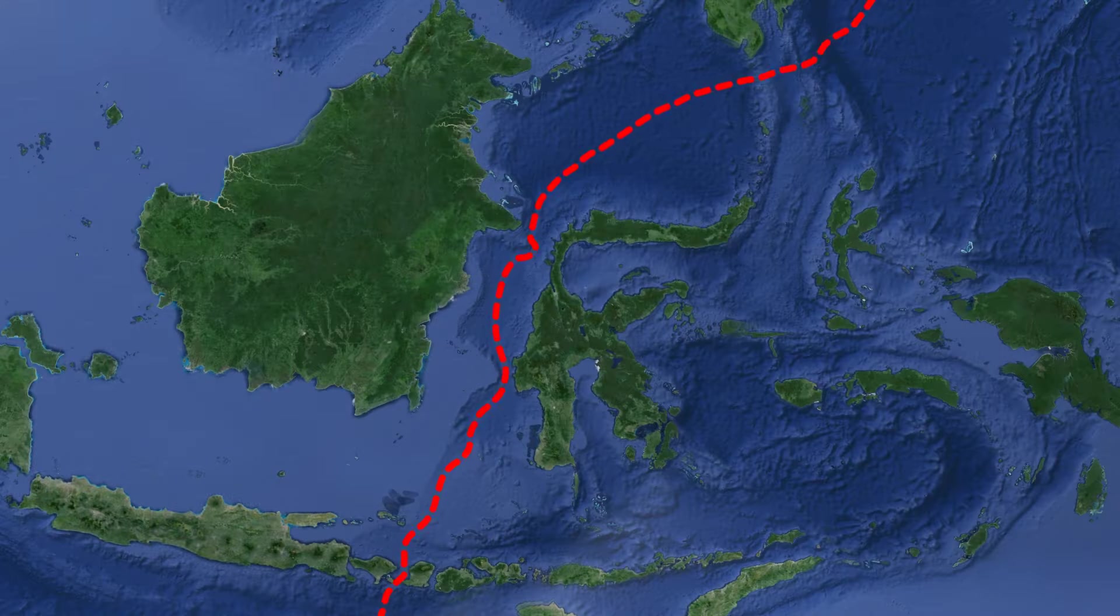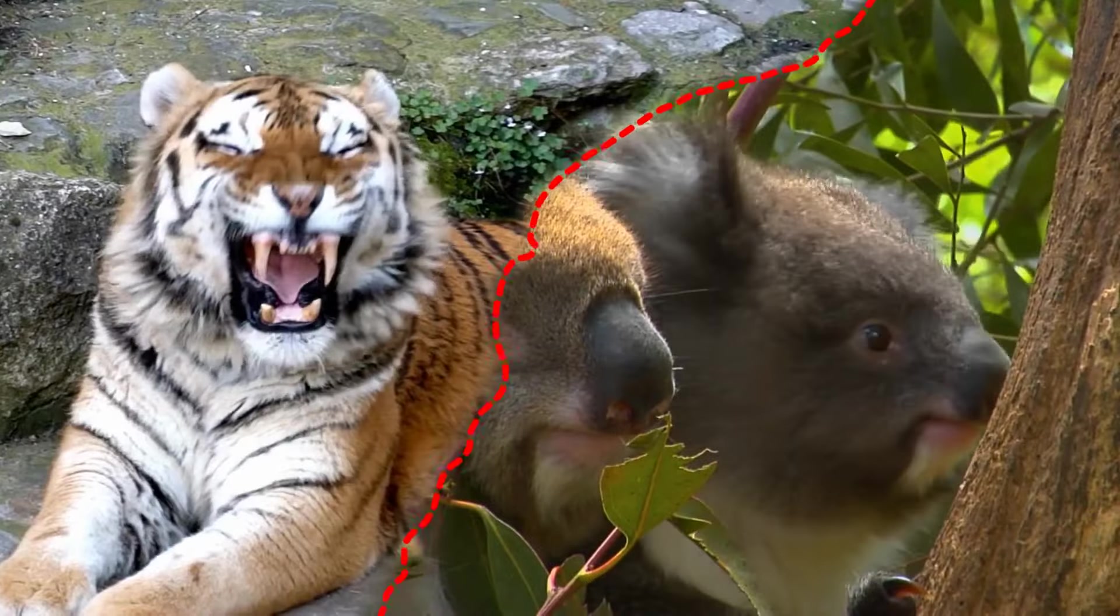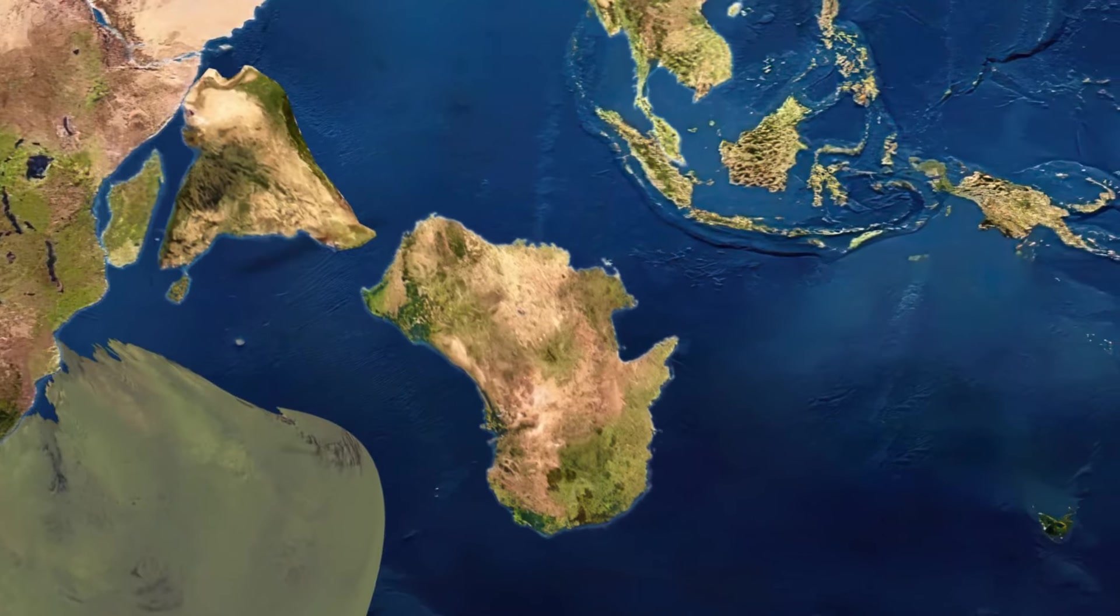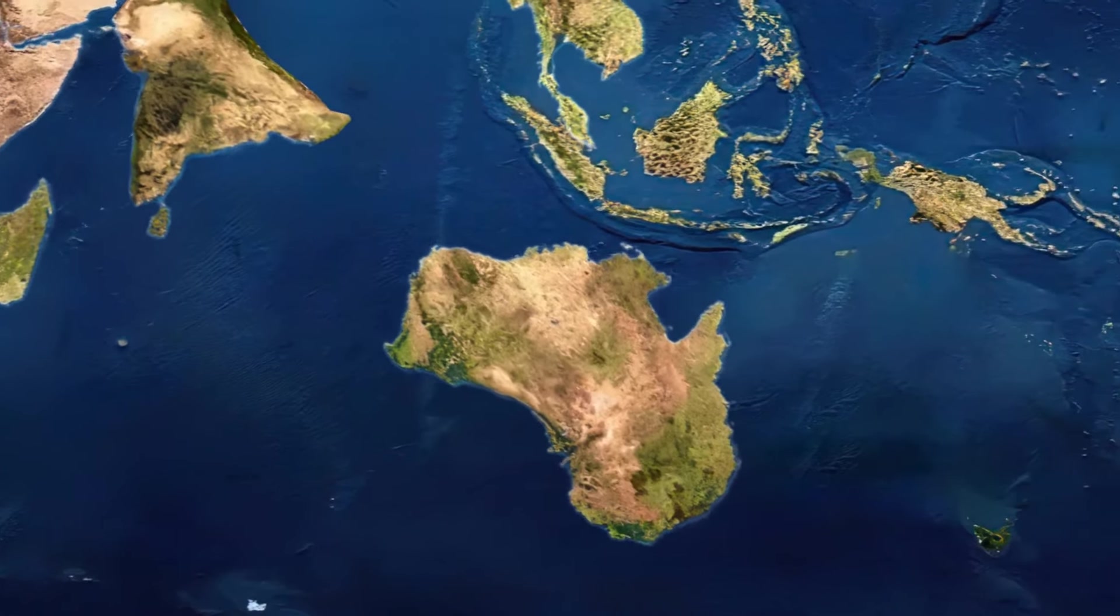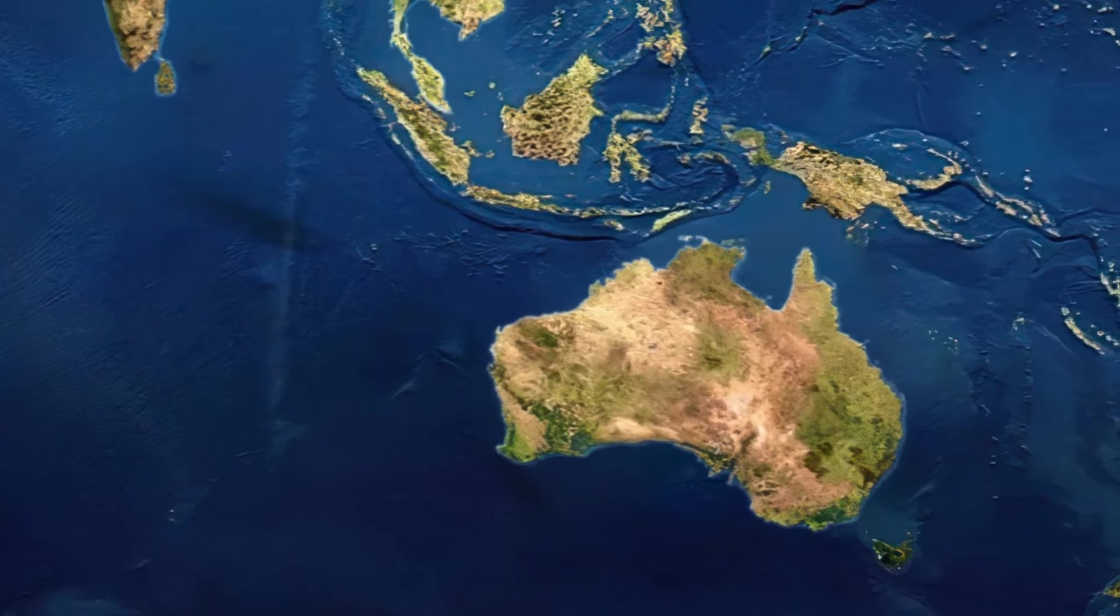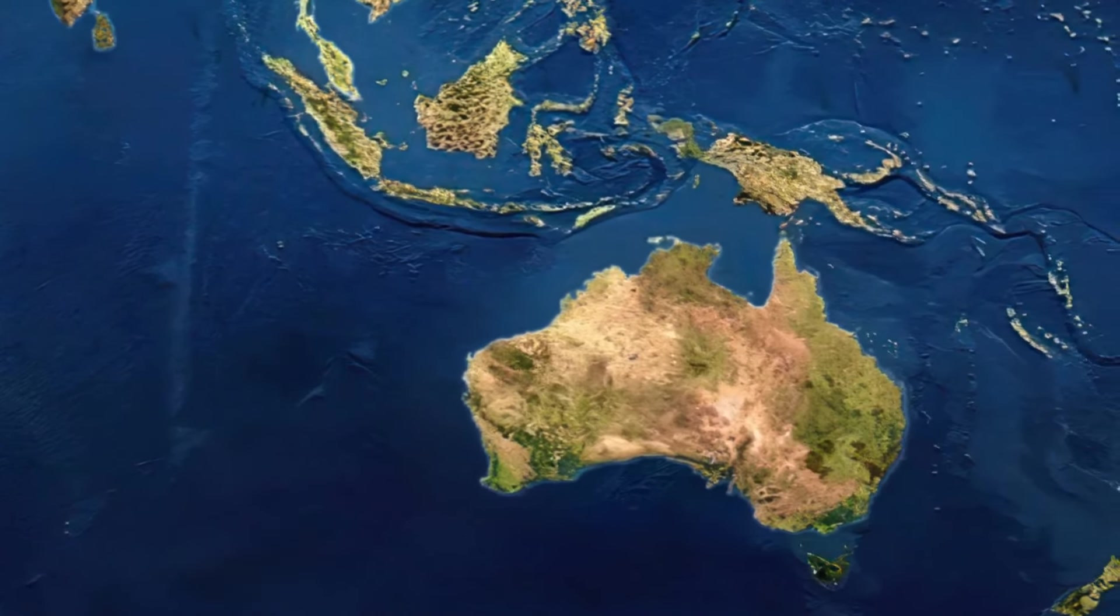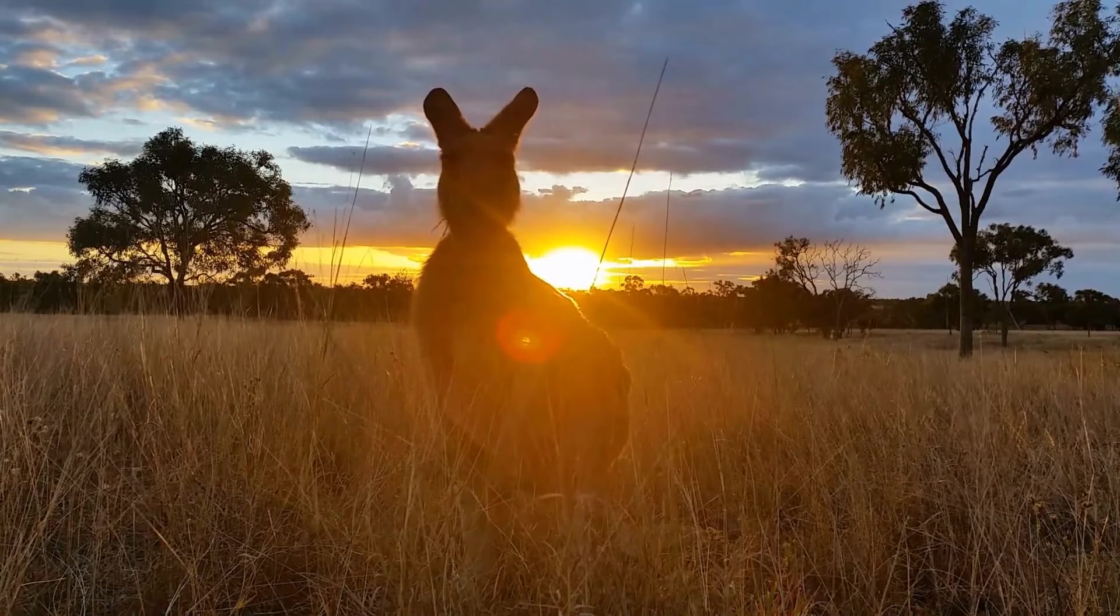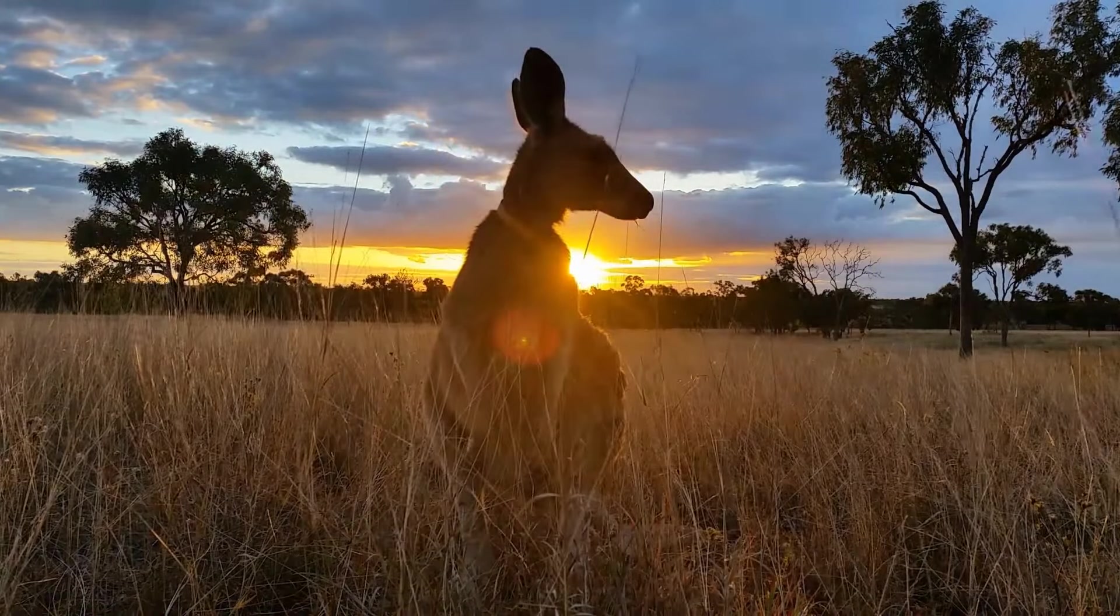This invisible line is like a wall between marsupials and tigers, or honey-eaters and trogans. But now we know that around 35 million years ago, Australia broke up with Antarctica and collided with Asia. And this continental love triangle triggered significant changes. It didn't just change the way the land looked. It also messed with the species of animals on each side of the Wallace Line.